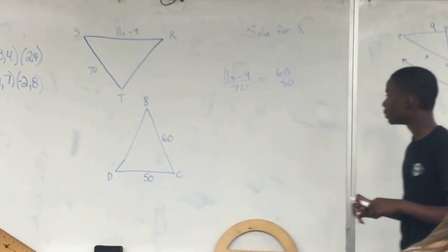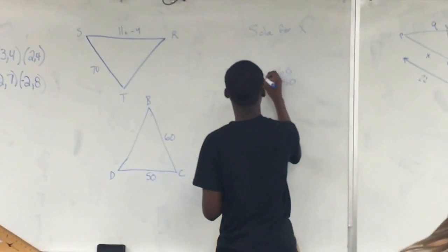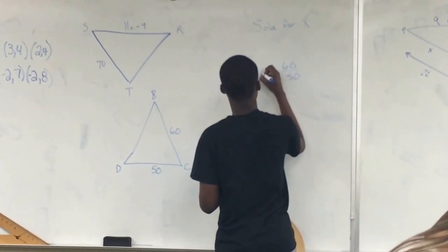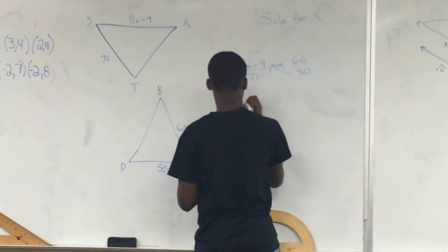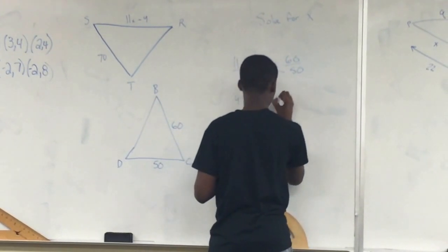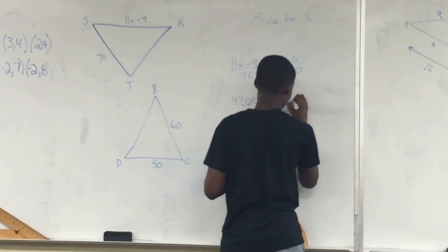Next we're going to cross multiply the proportion. In the end, you should get 4200 is equal to 550x minus 200.